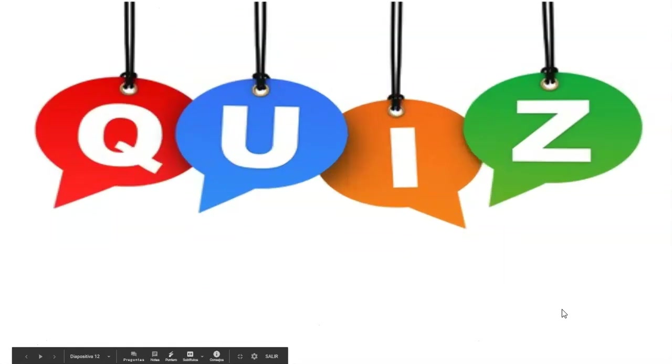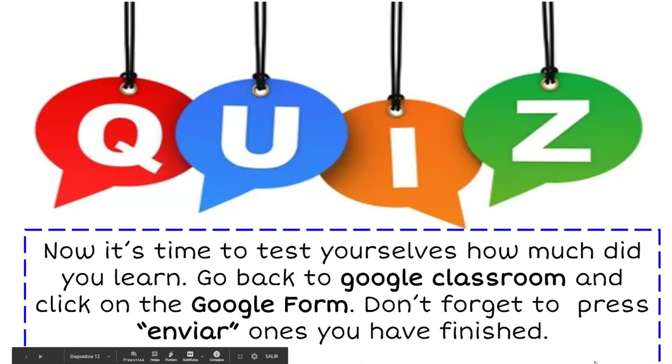And finally, we're going to do a little quiz that is going to have some credits that are going to add up a grade. Now, what you're going to do is go back to Google Classroom. You're going to click on Google Form. And please don't forget to press submit once you have finished. Thank you very much. Hope you enjoyed.